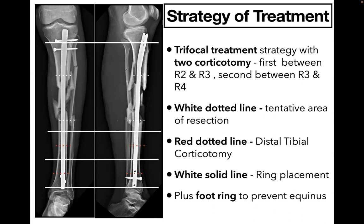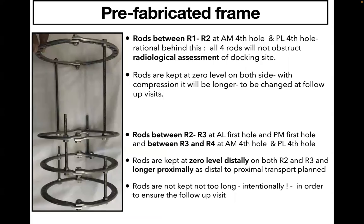The white dotted line indicates the tentative area of resection, the red dotted line the tentative area of corticotomy, and white solid lines show where the rings will be placed. A foot ring should be given when the gap is larger than 6 cm to prevent equinus. This is how a prefabricated ring frame looks. The rods between the 1st and 2nd ring are at the anteromedial 4th hole and posterolateral 4th hole, so that all 4 rods do not obstruct radiological assessment at the time of docking.